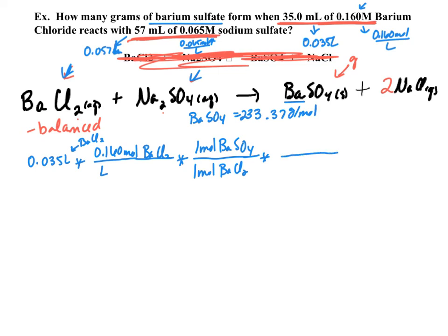We have 0.035 liters, and we're going to multiply that so that for every liter we have 0.160 moles of BaCl2. Now we need our molar ratios, so for every one mole of BaCl2 we get one mole of BaSO4. Now since we're going into grams of barium sulfate, we need to know the molar mass there. The molar mass of BaSO4 is 233.37 grams per mole. This is going to give us 1.3 grams of BaSO4.